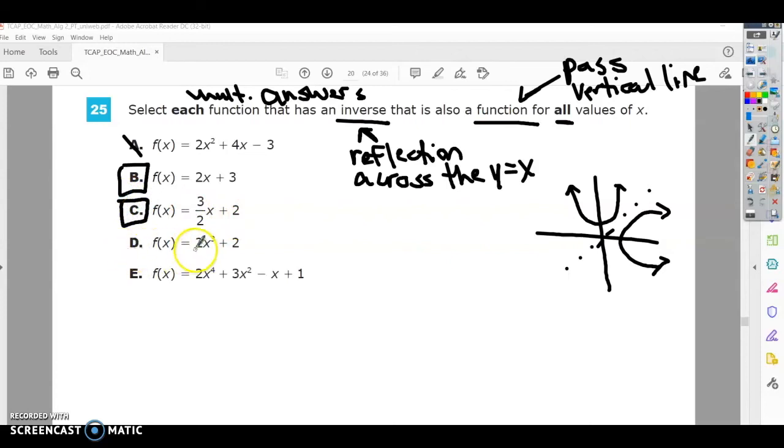All right, so D is a cubic function, which means its inverse is a cube root function. If you think back to your parent functions, I'm going to sketch another poor graph here. So if you have a cubic function, then your inverse is going to be something like this. So this one would also pass the vertical line test.